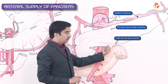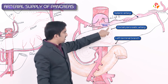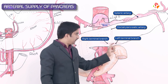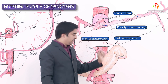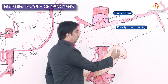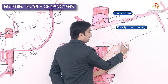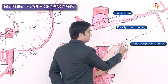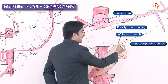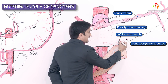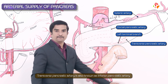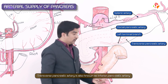In summary: the dorsal pancreatic artery arises from the proximal two centimeters of the splenic artery, divides into right and left branches near the inferior border of the pancreas. From the left terminal branch, another artery arises called the transverse pancreatic artery.